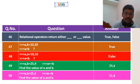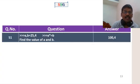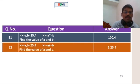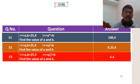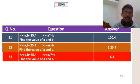Next one: multiplication equals — a is equal to a into b, so 25 into 4 is 100, b value is 4. Division equals: 25 divided by 4 is 6.25, a value is 6.25, b is equal to 4. Floor division equals means that it returns the lowest integer value.